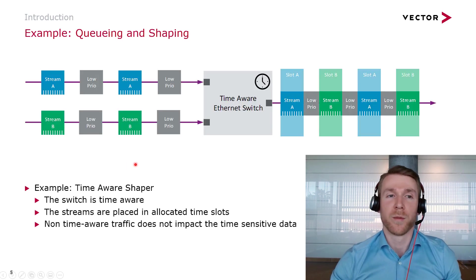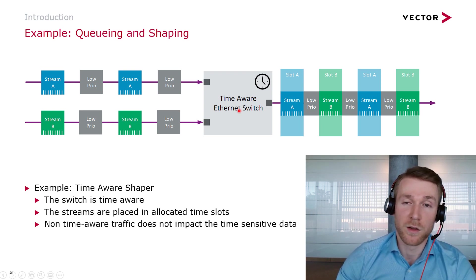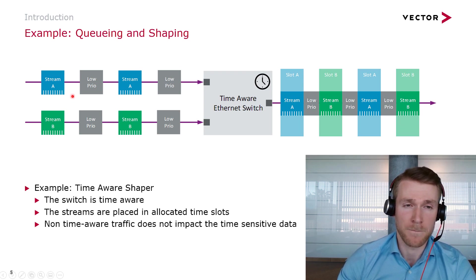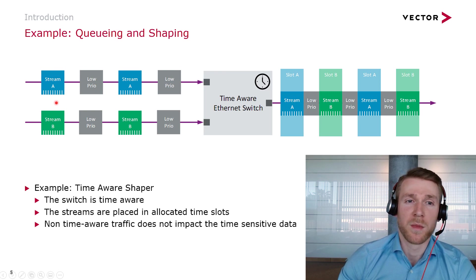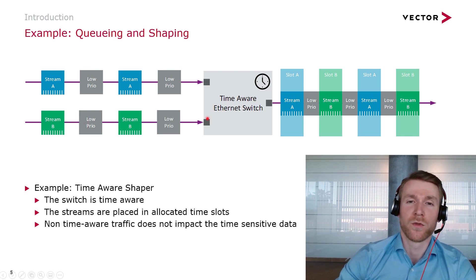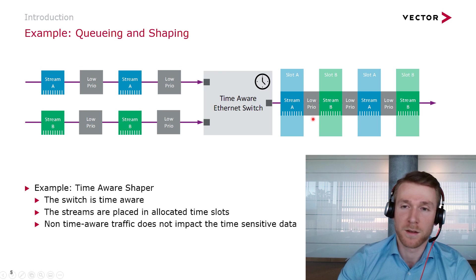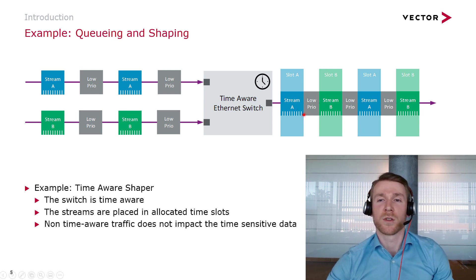Now let's apply TSN mechanisms to our example. All elements in the network are time synchronized, so the cameras, the switch, and the ECU share a common time base. The cameras may transmit image data at the same time, or interlaced — which is now possible after time synchronization. In this example, let's assume they are still transmitting simultaneously. Some non-time-aware, low-priority traffic is also mixed in. The switch is configured to forward certain streams in scheduled time slots — referred to as a time-aware shaper. The low-priority traffic fills the gaps and does not impact time-sensitive data, and the allocated slots ensure reception of image data in time, which is critical in real-time systems.